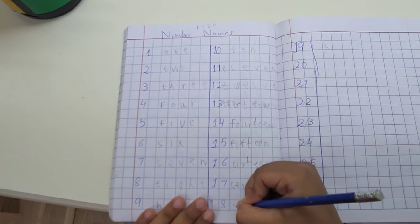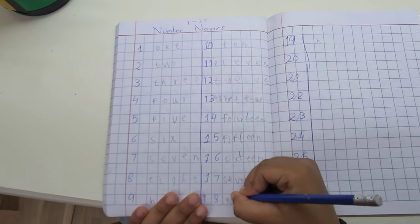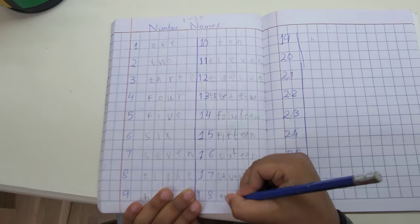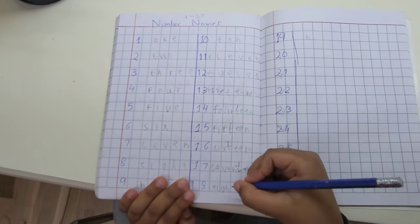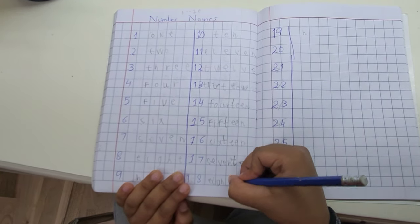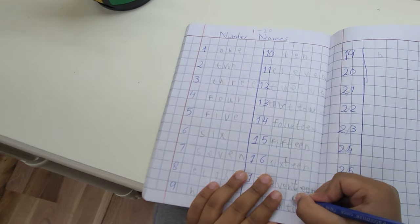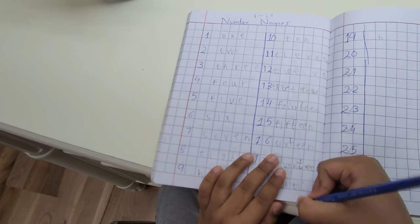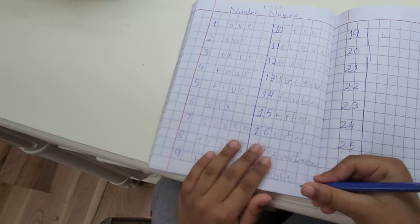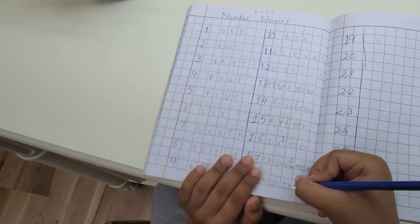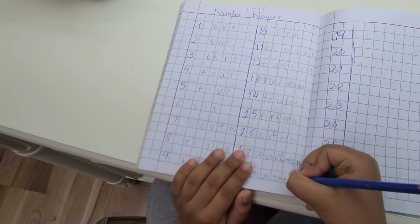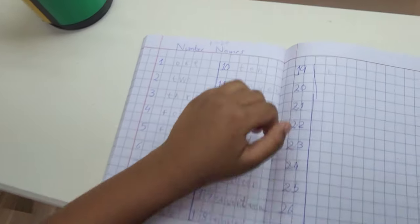E-I-G-H-T. I did a mistake. T-E-E-N, 18.